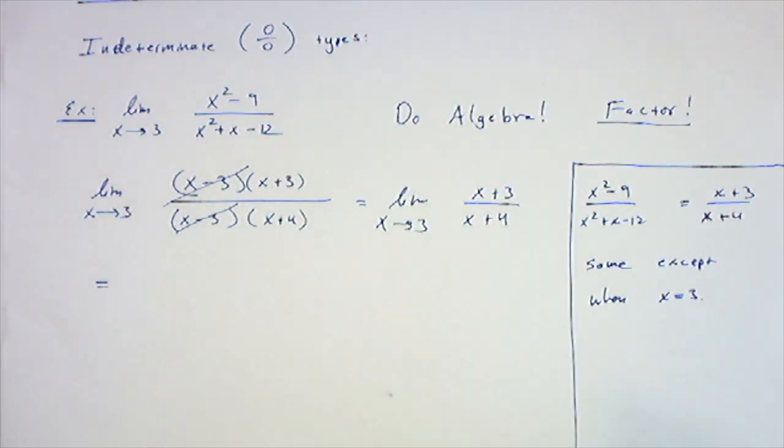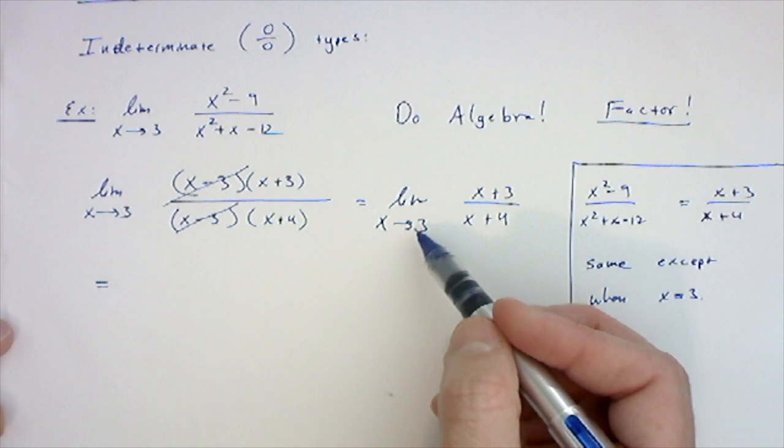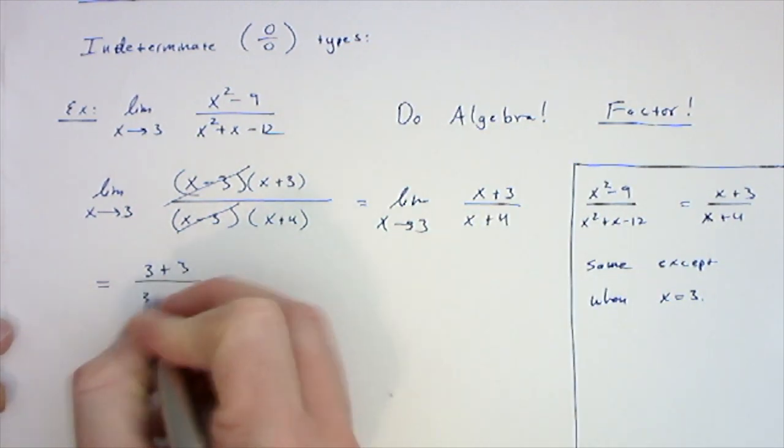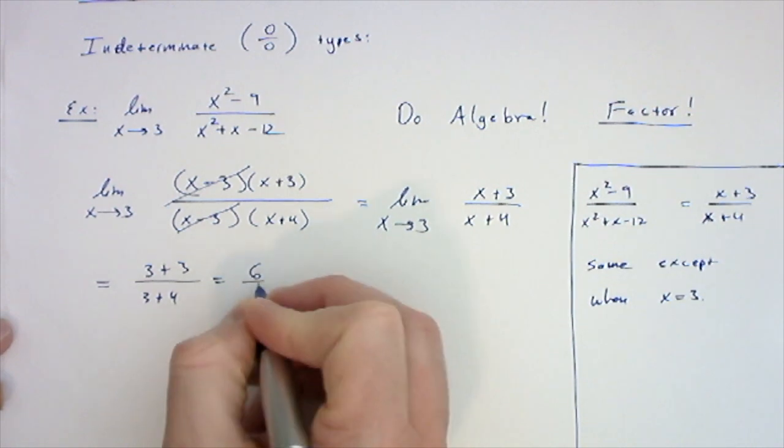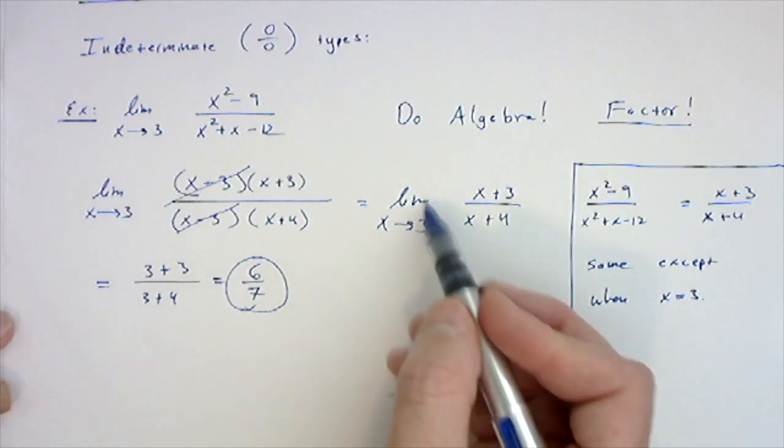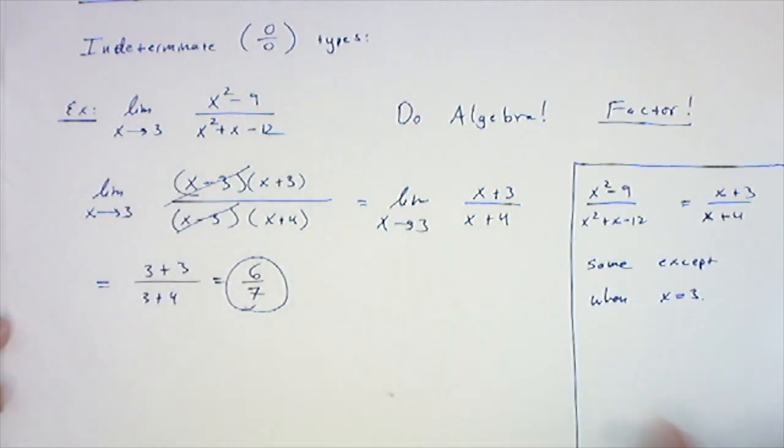Then we just do what's called the evaluation theorem. We evaluate this limit by plugging in 3 for x and we get 3 plus 3 over 3 plus 4, which is 6 over 7. Notice that once I've actually plugged in the values, I no longer write the limit, but up until then I do.